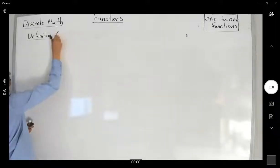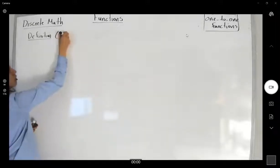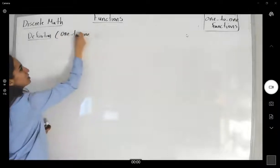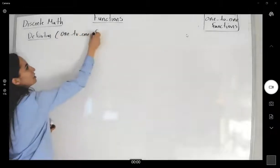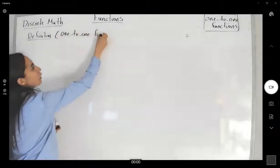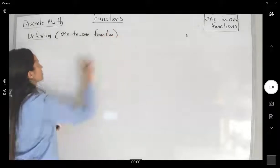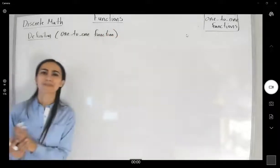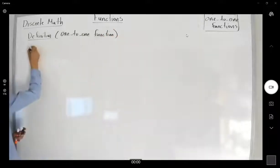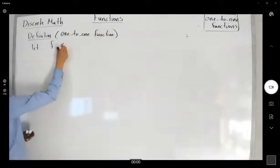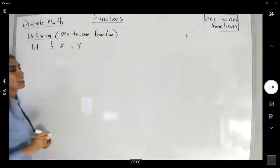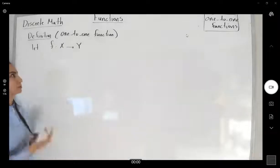Definition of a one-to-one function. Suppose you have a function like f. Let f map set X into set Y.